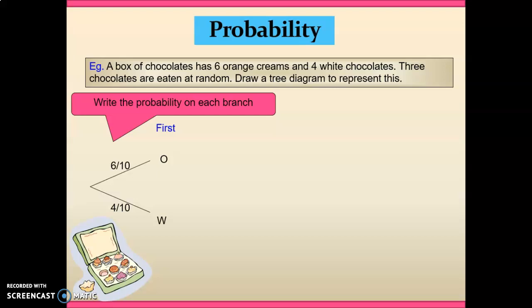But having taken that chocolate and presumably eaten it, we're now left with fewer chocolates. And so when we make our selection in our second chocolate, there is still orange and white chocolates available to us. But this time we've only got nine chocolates left in the box.